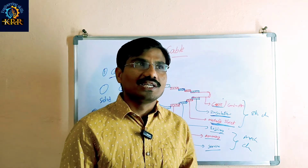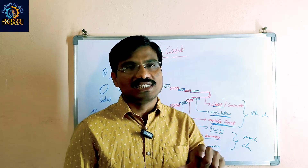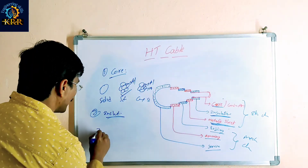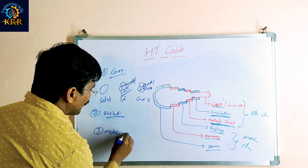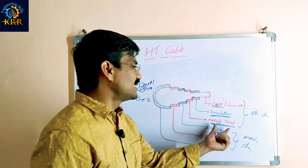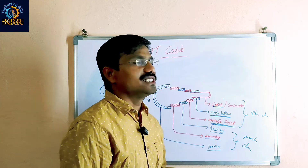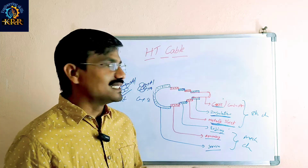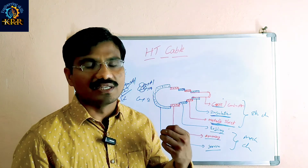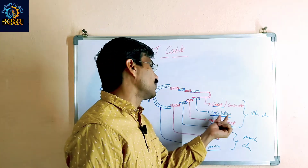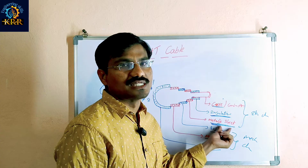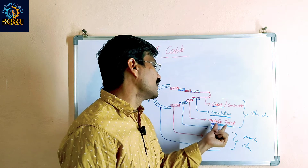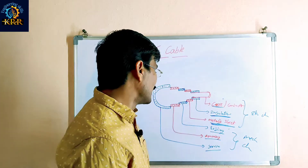The third one is the metallic sheet. The use of this metallic sheet is protection for the insulation. Some outside moisture can enter into the insulation and damage it. With the help of this metallic sheet, moisture cannot enter into the insulation, so it is used for insulation protection purposes.